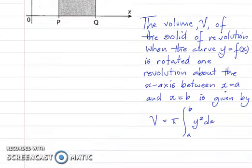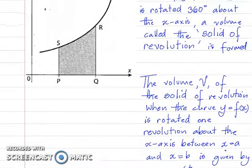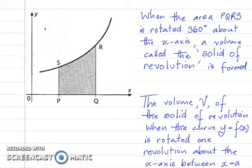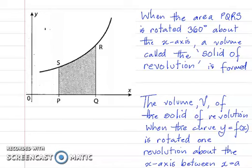I want to take a minute to explain where such a formula could come from. We're going to rotate PQRS about the x-axis, but I'm going to first start by rotating a very thin strip. This strip is so thin that it approximates a rectangle.